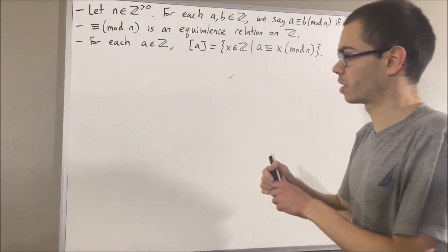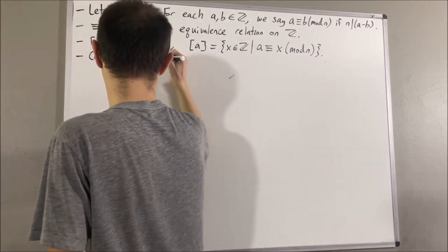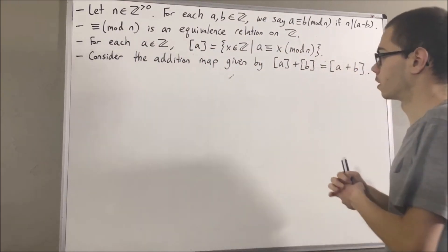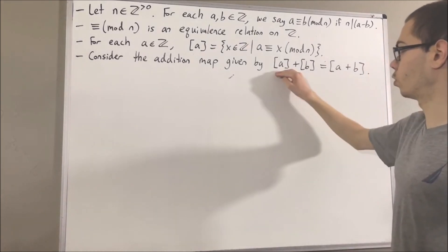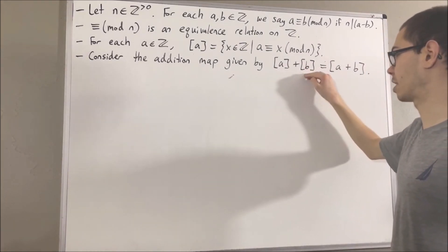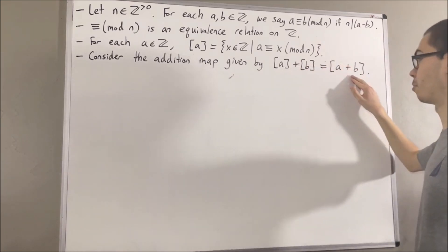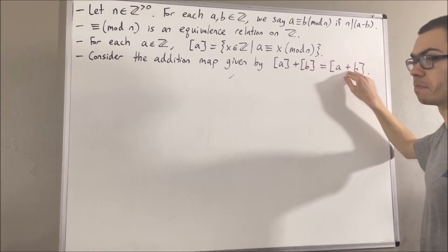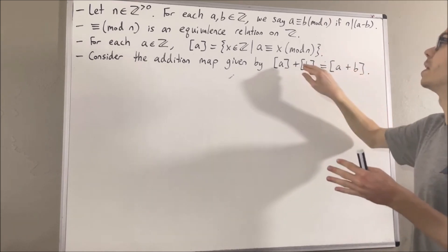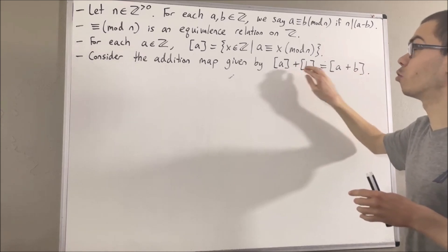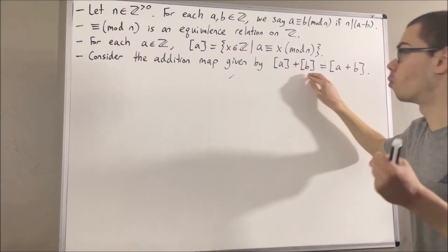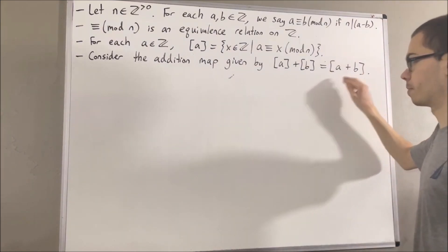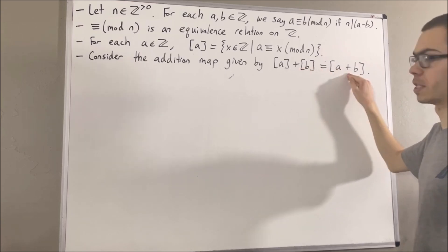The way we can do so is as follows. Given any two integers a and b, we write the equivalence class of a plus the equivalence class of b to be equal to the equivalence class of a plus b. It is understood that these two operations of addition are different, because this operation of addition is adding two equivalence classes of integers, while this operation of addition is adding two integers. But nonetheless, we will still write them with the same symbol.